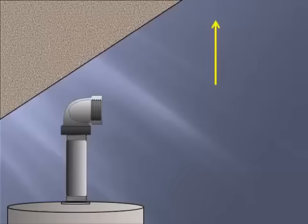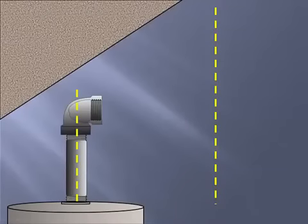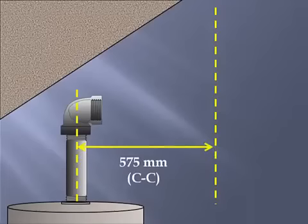First, we're going to establish two vertical lines to take a center to center measurement from the first piece of pipe with its fitting to the location of the next fitting. So we take that measurement and we find that the center to center measurement would be 575 millimeters required.